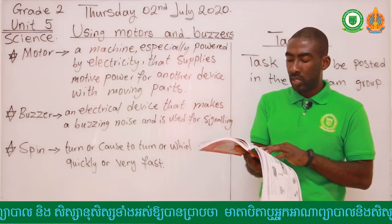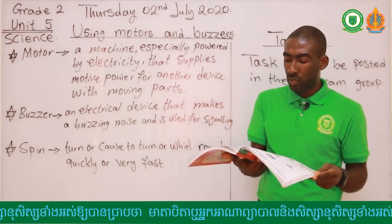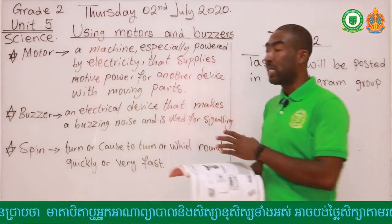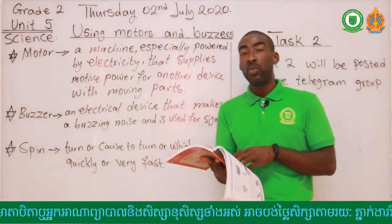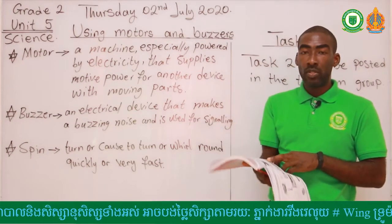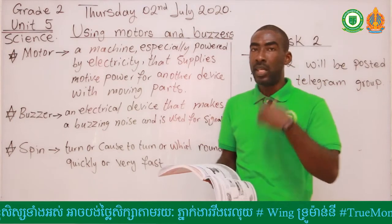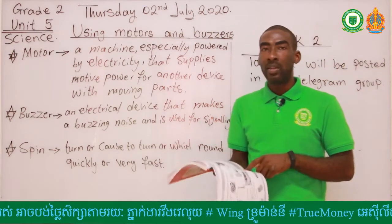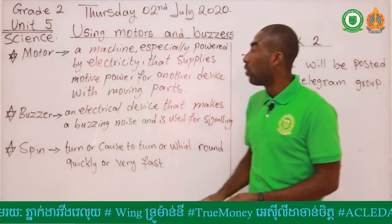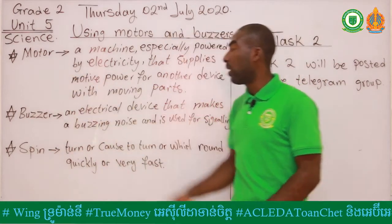Motors use electricity to make things turn, and buzzers also use electricity to make sound. The key things to understand in this lesson are: motors use electricity to make things turn — turn means to spin — while buzzers use electricity to make noise. So this is noise versus movement.